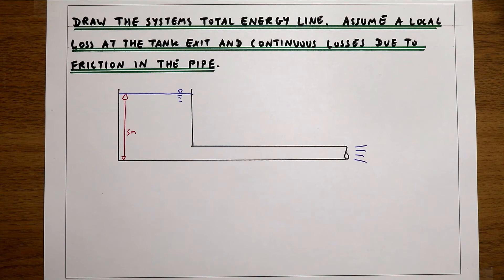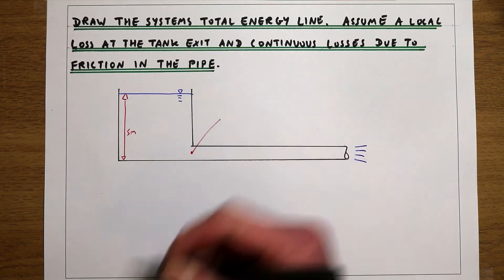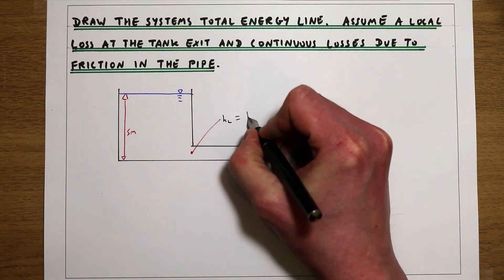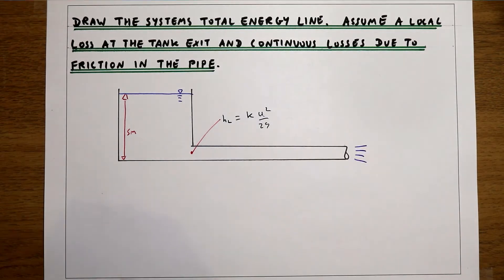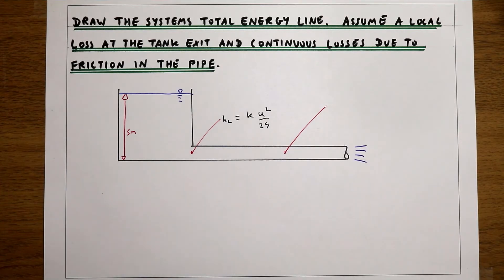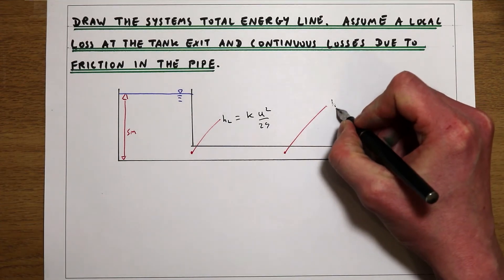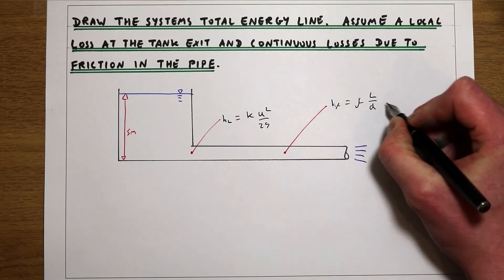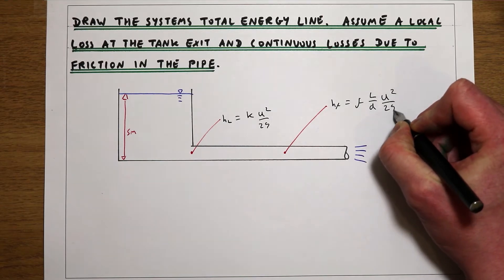We're told that we can assume there's going to be a local loss at the exit from the tank — a local loss at this point here equal to k·u²/2g. And we're going to have a continuous loss in the pipe due to friction, which we can describe as the friction factor times the pipe length over the pipe diameter times u²/2g.